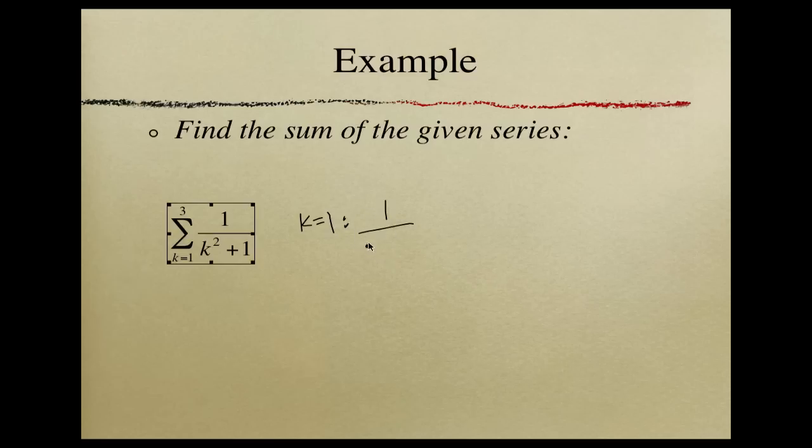So we plug in 1 for k. So that means we have 1 over 1 squared plus 1, which equals 1 over 1 squared is just 1, so 1 half. When we plug in 2 for k, we get 1 over 2 squared plus 1, which is 1 over 4 plus 1, which equals 1 fifth. And when k equals 3, we have 1 over 3 squared plus 1, which equals 1 over 9 plus 1, which is 1 tenth.